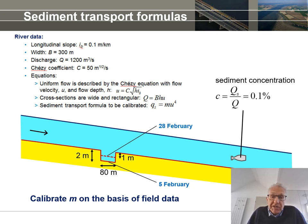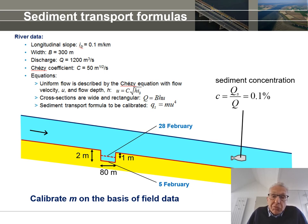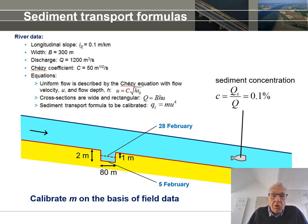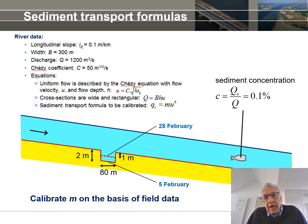Additionally, a part of the riverbed had been lowered over a distance of 80 meters. Because this longitudinal profile is compressed, the vertical dimensions are exaggerated relative to the horizontal ones. So what seems like a locally deeper riverbed is actually a reach of 80 meters that was 2 meters deeper. But in a period of 23 days, from 5 to 28 February, 1 meter of sedimentation occurred. Can you calibrate m on the basis of those data?